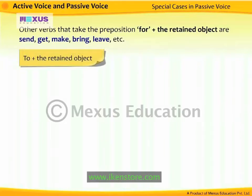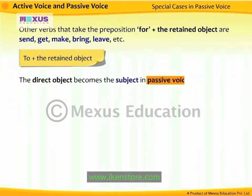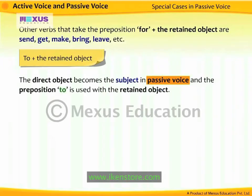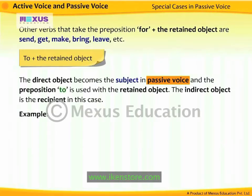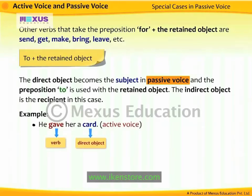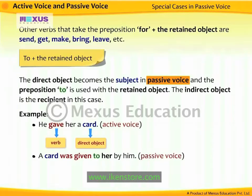To plus the retained object: the direct object becomes the subject in passive voice, and the preposition 'to' is used with the retained object. The indirect object is the recipient in this case. For example, 'He gave her a card' becomes 'A card was given to her by him.' The direct object 'card' becomes the subject, and the preposition 'to' is used with the retained object 'her.'